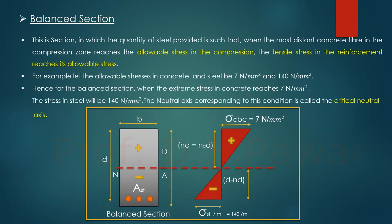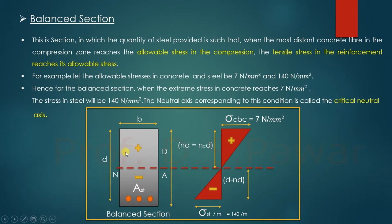First, let's look at the balanced section. If you take any cross-section of a beam having width small b and overall depth capital D, and effective depth small d — the effective depth is measured from the top compression fiber of the beam to the center of the tension reinforcement. This applies when we consider a singly reinforced beam — a beam which provides reinforcement in only one zone. The neutral axis is the axis which has zero stresses.